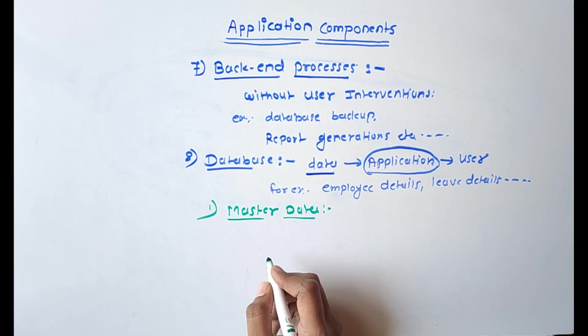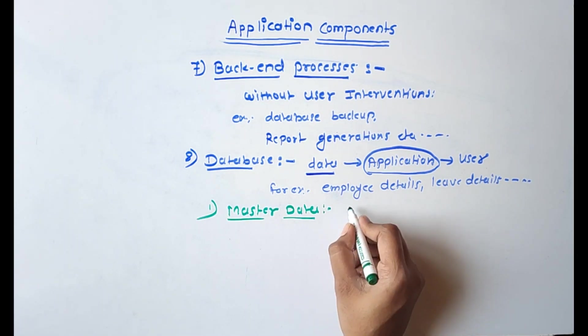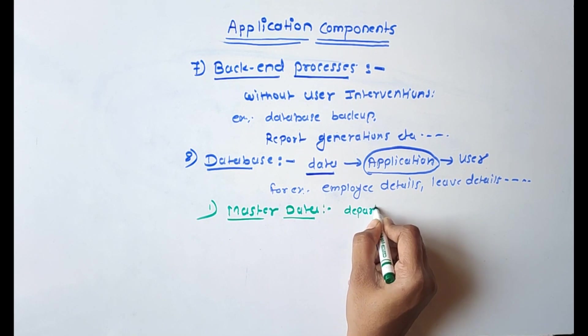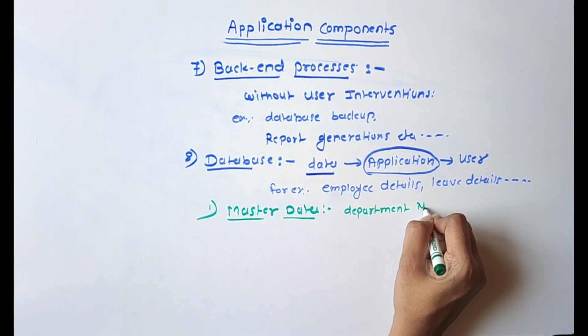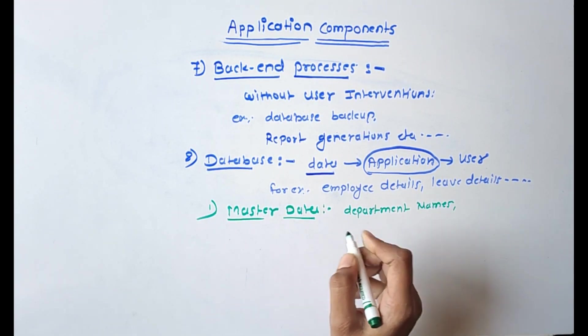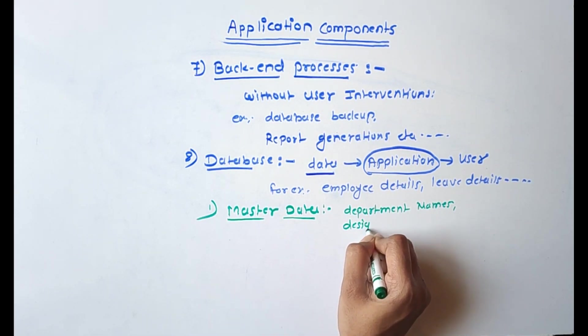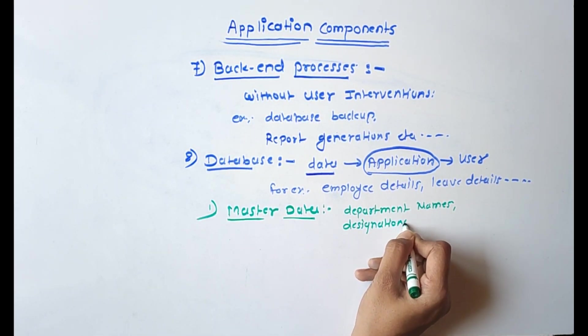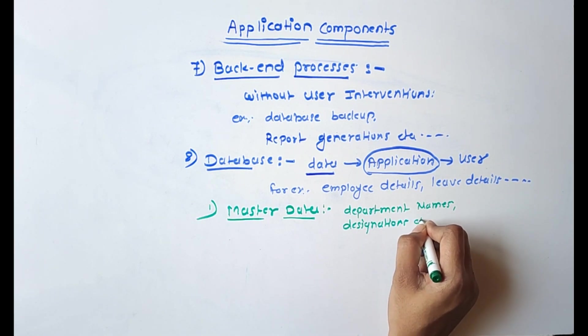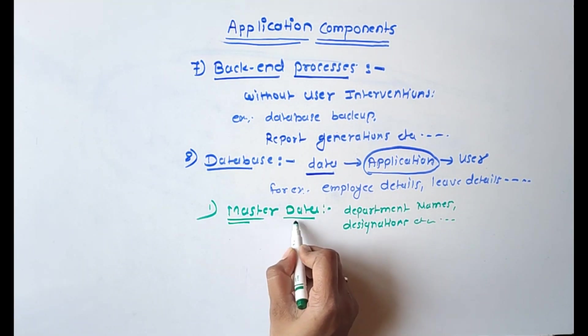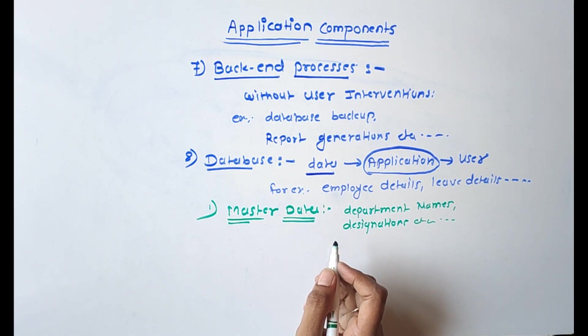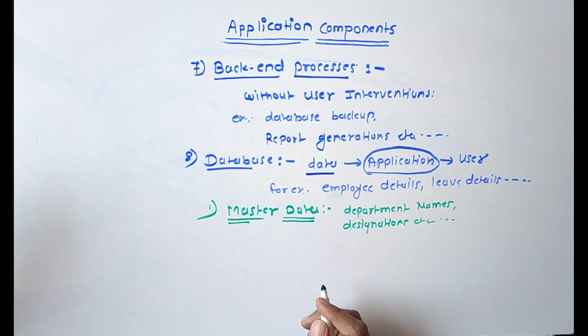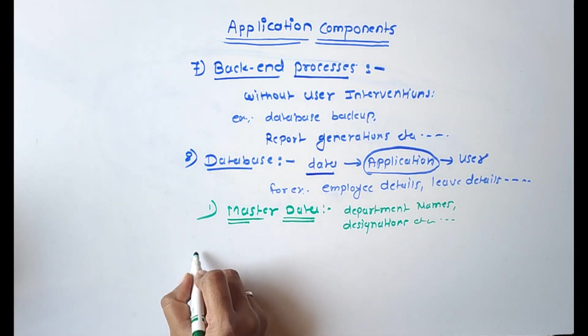There are three formats to store data. In that, first one is master data. Master data is mostly fixed, like department names, then designations and etc. That we call it as master data. The data that doesn't change frequently, contains only column headings, table structures, etc.